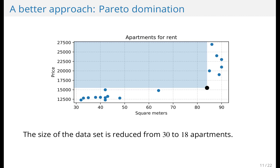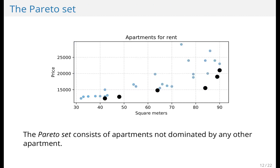We can repeat this procedure. We pick an apartment, look at which apartments are dominated by the new apartment, and remove them. And this leaves us with the Pareto set — it consists of apartments that are not dominated by any other apartment.